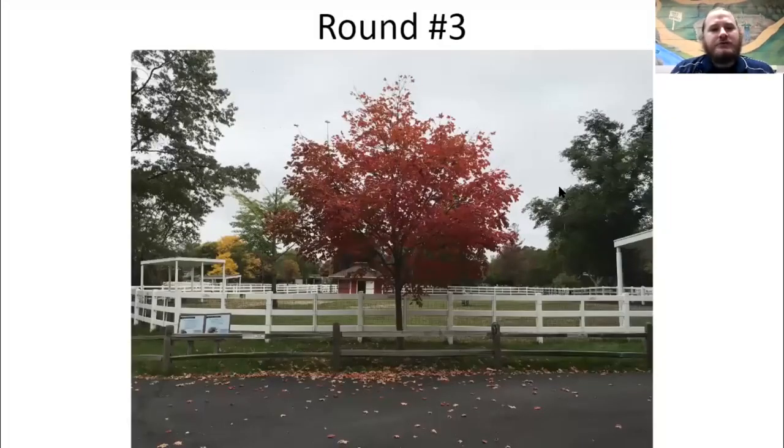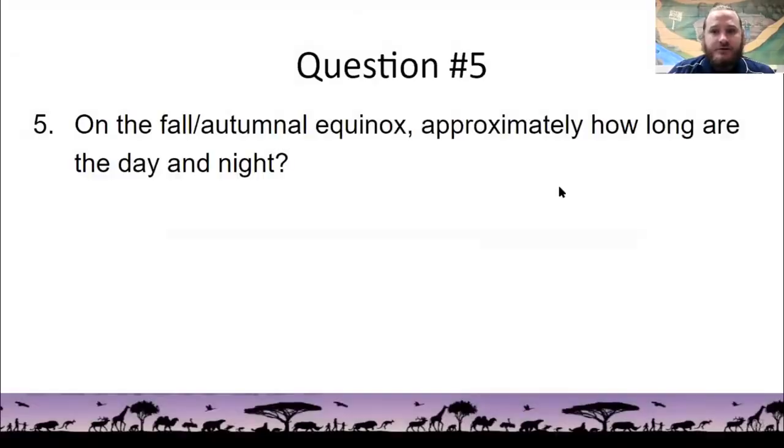All right, moving on to round three. Here is a photograph of a tree by Buster and Trio's habitat at the zoo. These questions are a little bit harder. They're three points each. On the fall or autumnal equinox, approximately how long are the day and night? All right, this is just a fill in the blank, and the answer can be a number. And if your number is within 30 minutes of the correct answer, then you'll get credit.